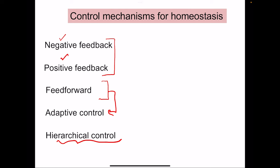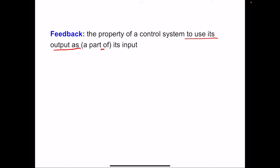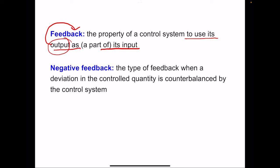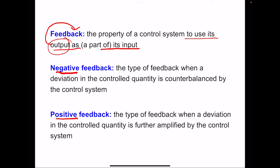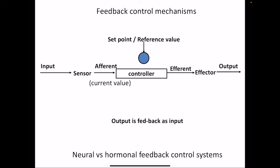Feedback is the property of a control system to use its output as its input. The output is fed back into the system for continuous monitoring. There are two types of feedback mechanisms: negative feedback and positive feedback. In negative feedback, the deviation in the controlled quantity is counterbalanced by the control system. In positive feedback, the deviation in the controlled quantity is further amplified by the control system.